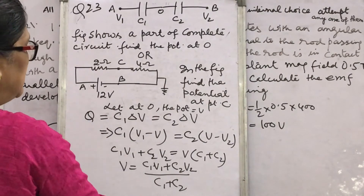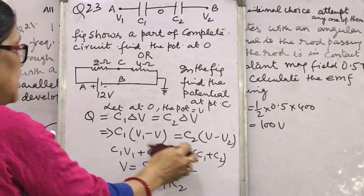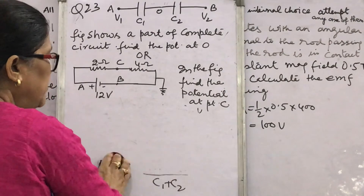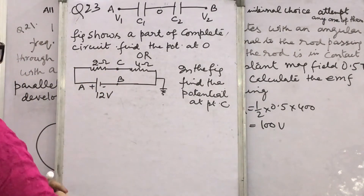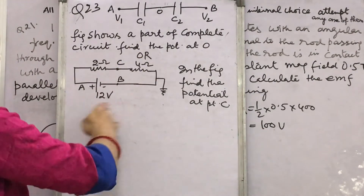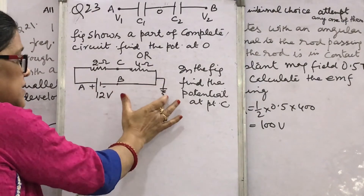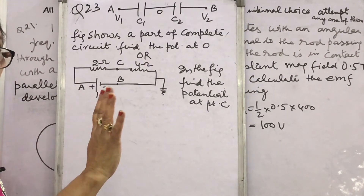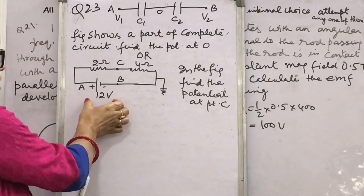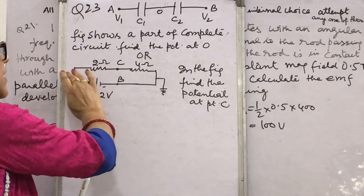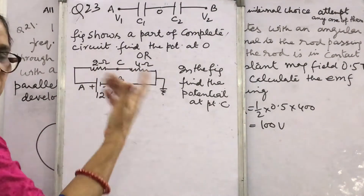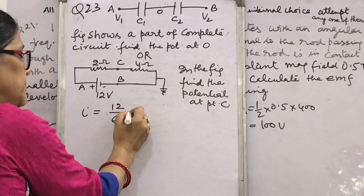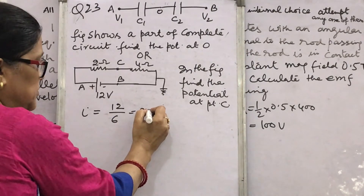Now the choice question for Q23. The figure shows a circuit with EMF 12 volt, and resistors 2 ohm and 4 ohm connected in series — total resistance 6 ohm. The current in the circuit is 12 volt / 6 ohm = 2 ampere. The point B is earthed.